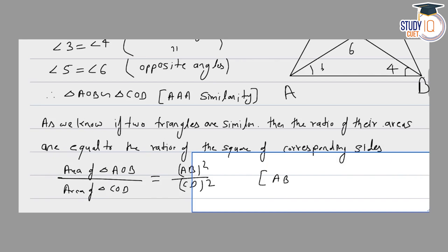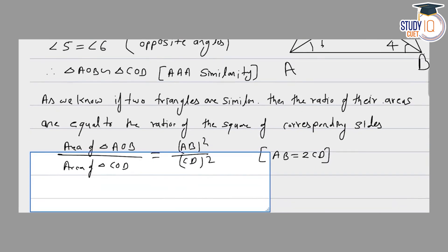If we put 2CD, the ratio is 4CD squared divided by CD squared. Cancel, so the ratio is 4 by 1.